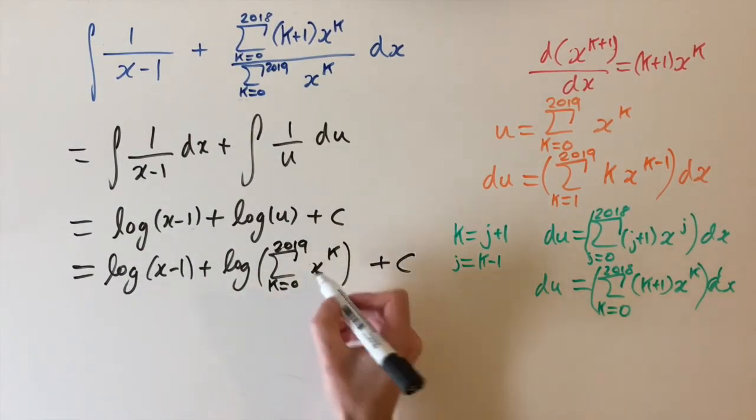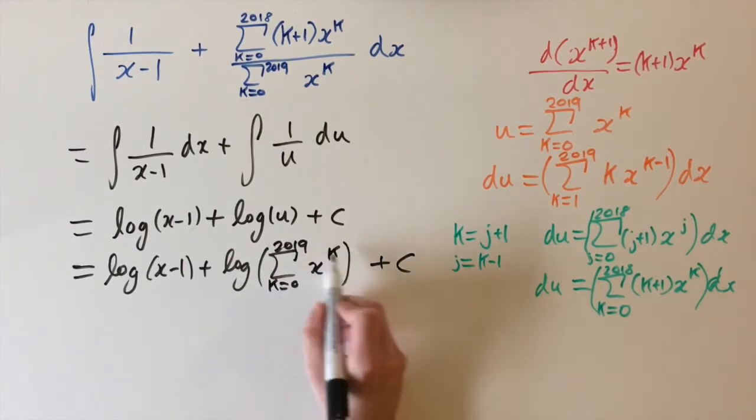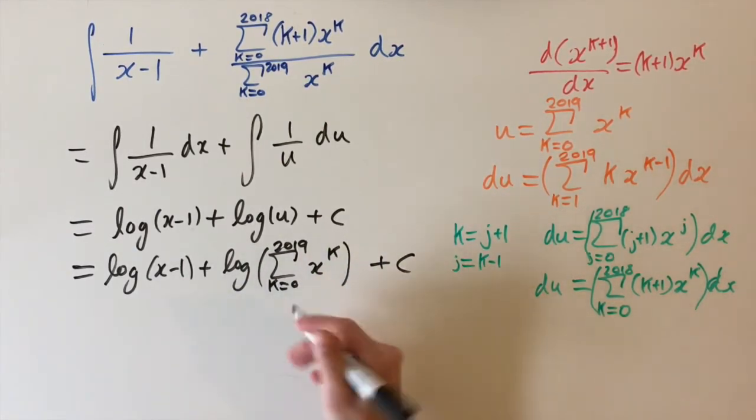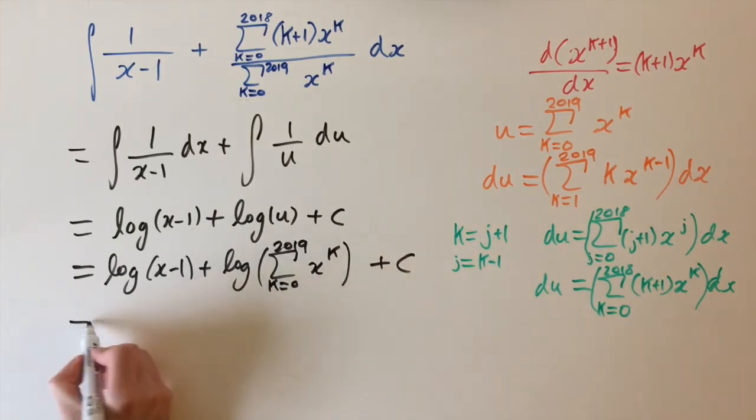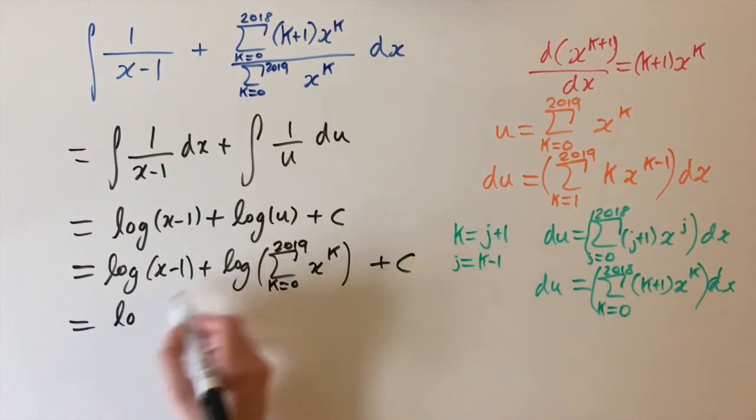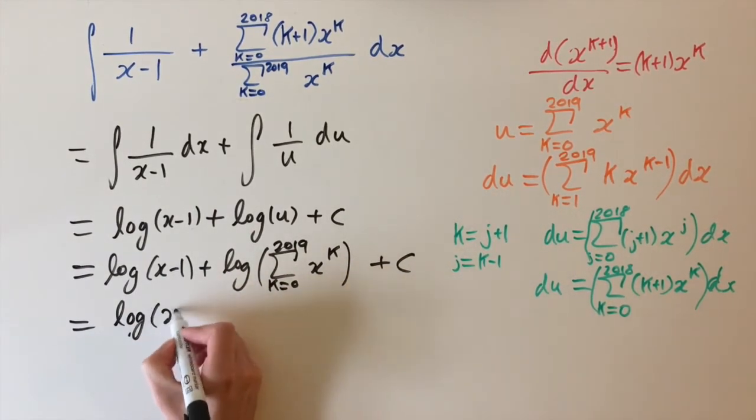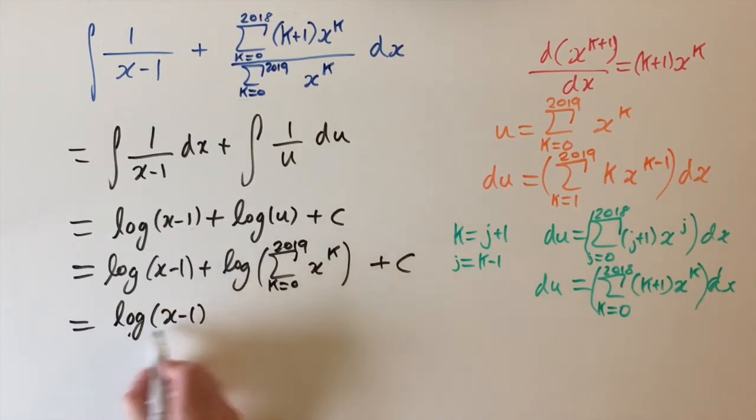So this is actually a correct answer. We can actually simplify a little bit more because this is a geometric series in here. And we can actually use the formula for the sum of the geometric series. And if we do that, then we can actually exploit some of the properties of logs that we know. So we have log of x minus 1. That's the first term.